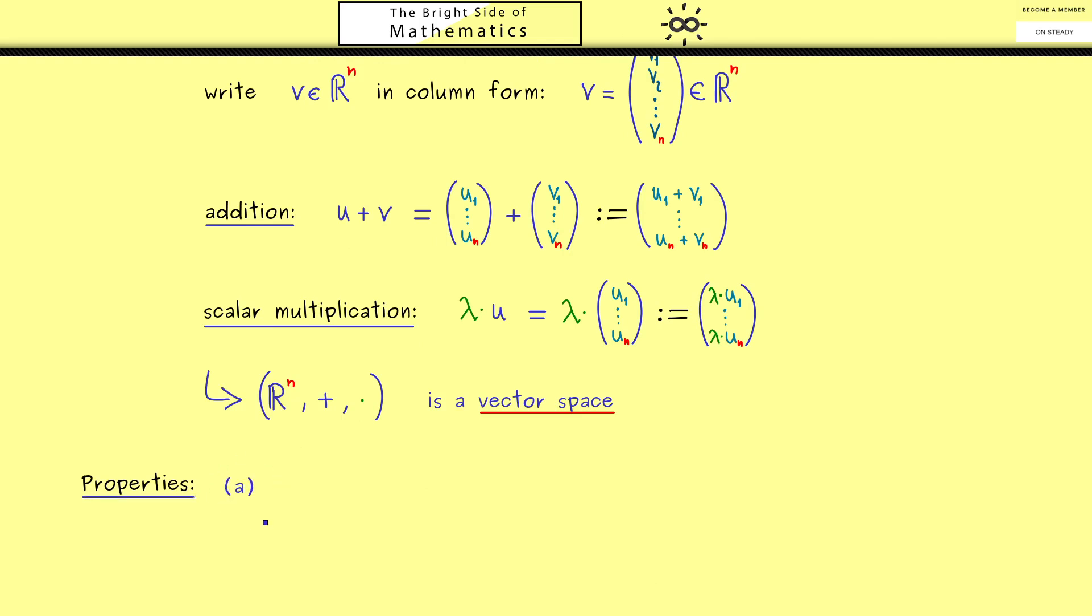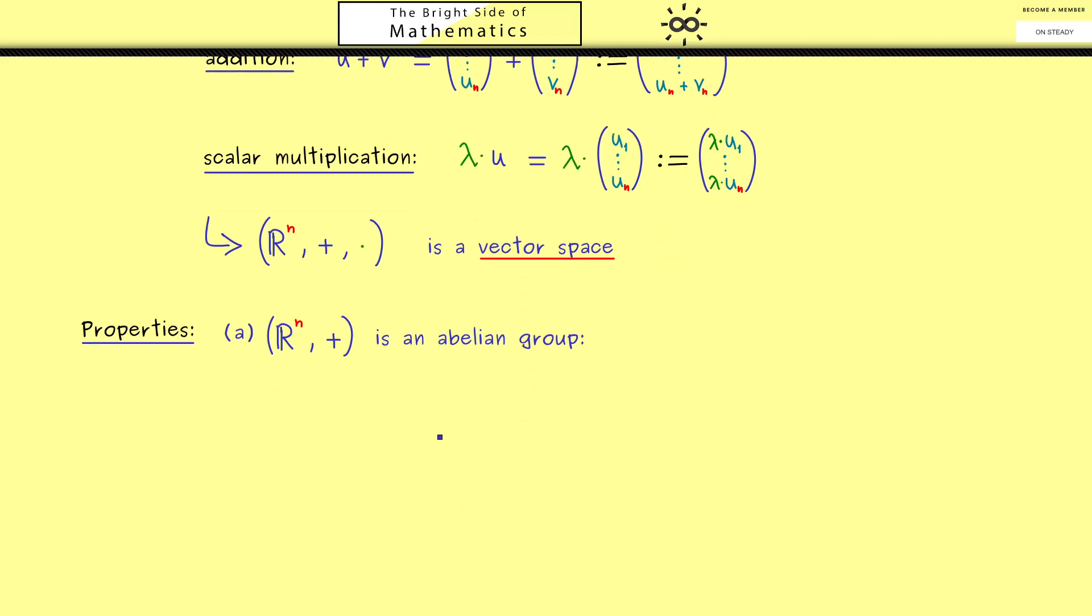The first four just describe that R^n together with the addition is an abelian group. This means we have a group that is also commutative. Now if you don't know what this means it will be helpful when we list all the four properties here. Here number 1 tells us that the addition is associative. More concretely this means when we have 3 vectors and 2 additions involved we can set the parentheses as we want. So we don't change the overall order of the vectors u, v, w but we change which addition is first solved. And now if this is the same no matter which vectors we choose we say the addition is associative.